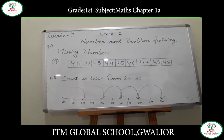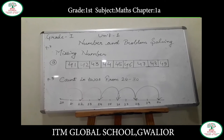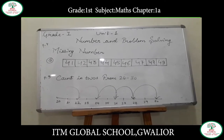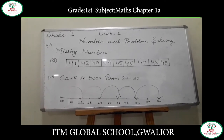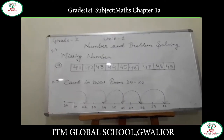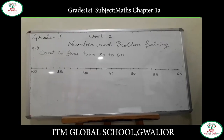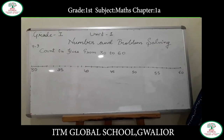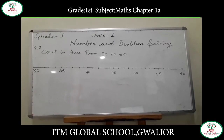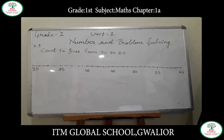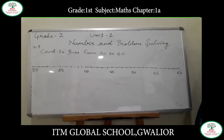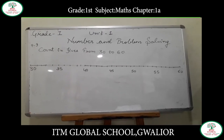In another example in your book, on page number 9, question number B is: we have to count in fives from 30 to 60.